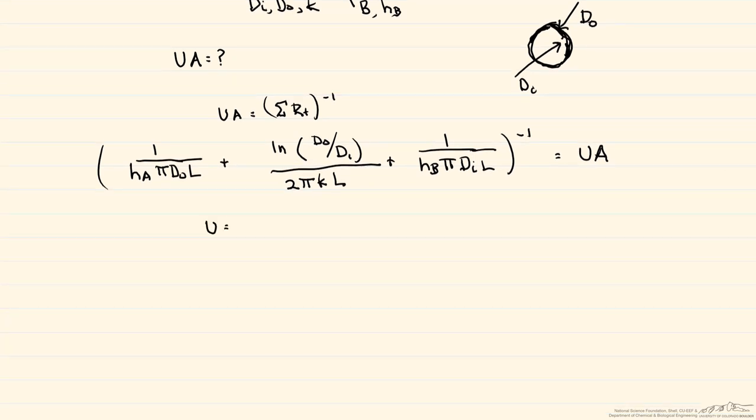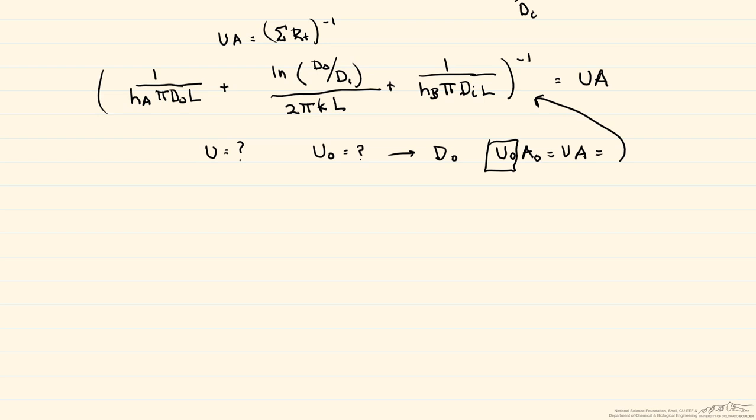So again, we want to find a U, and you can find it in terms of the inside diameter or in terms of the outside diameter. So let's look at it, and we write it here in terms of this outside diameter. And so what this means is that U outside times A outside is equal to UA, which is equal to what we had here. So basically what we're going to do is divide this expression that we put together by that outside area, and from that we get our U outside.